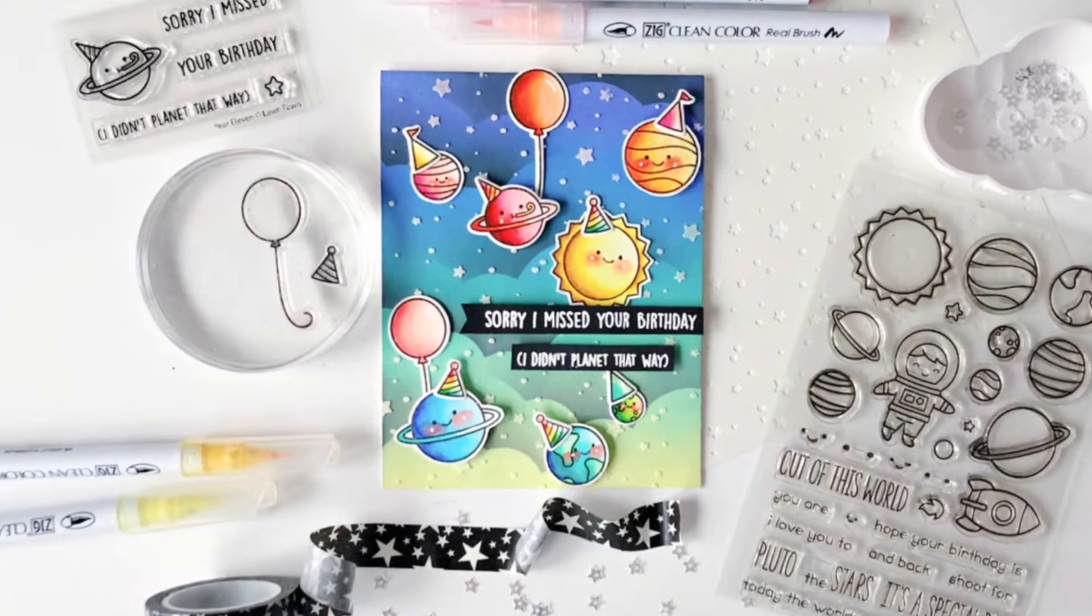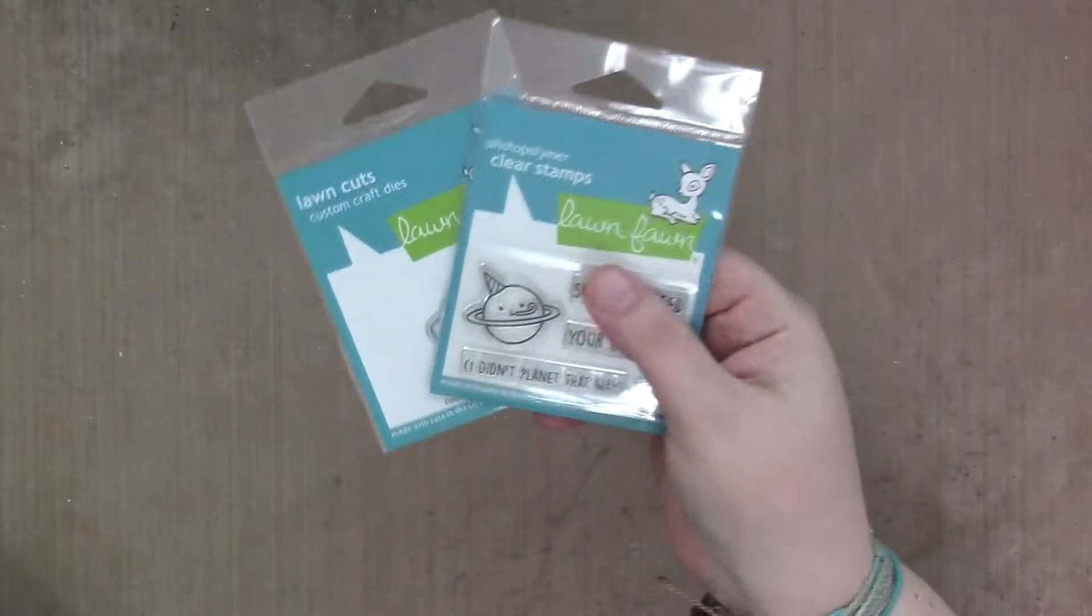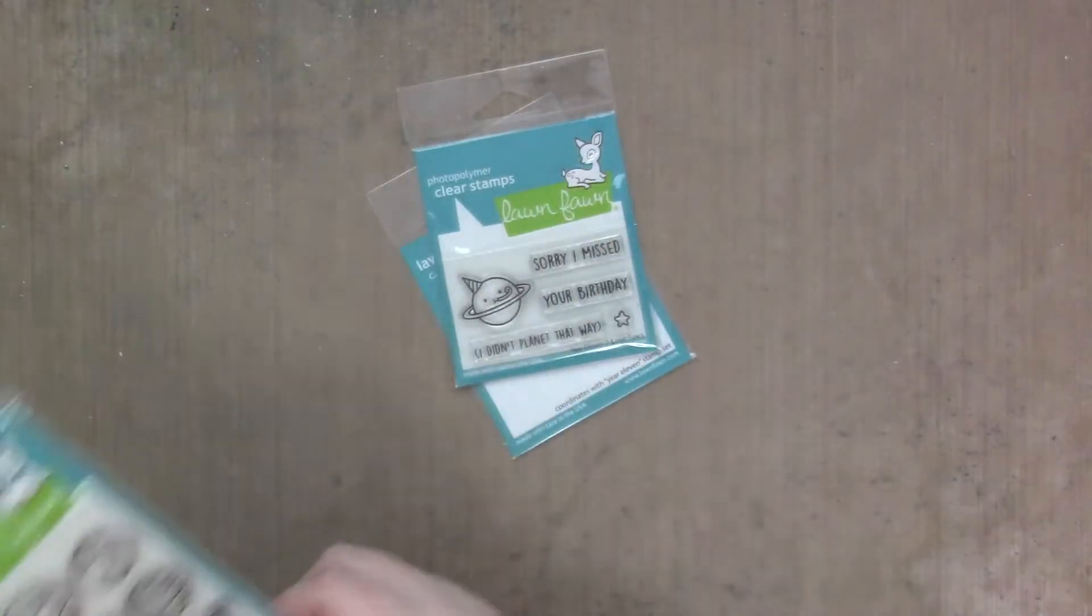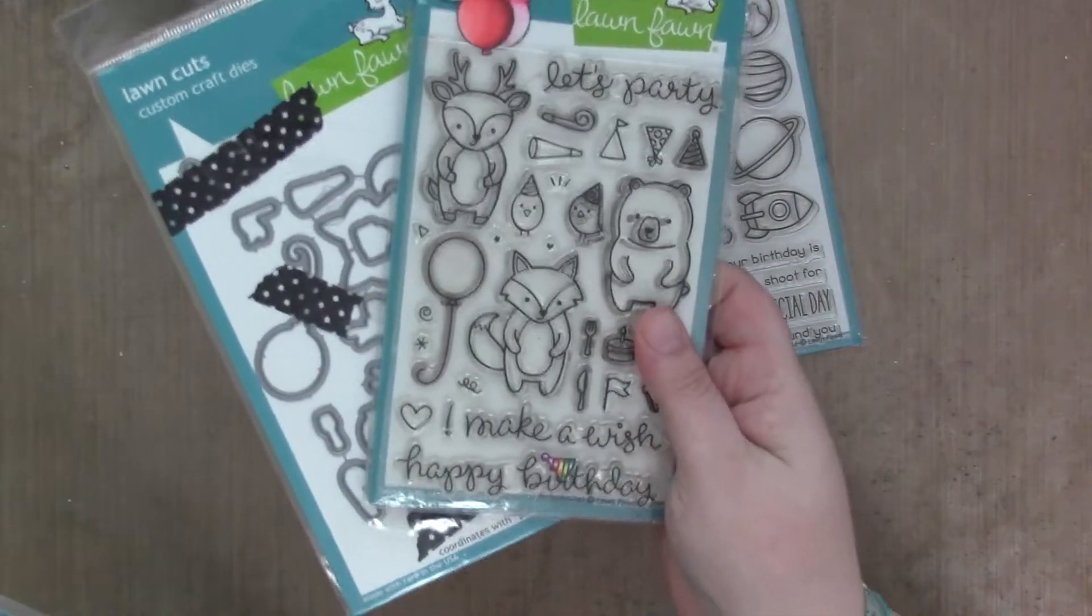Hi guys, it's Sam and I'm back with another video for Lawn Fawn. Today I'm making a belated birthday card with Year 11 stamps and dies, Out of This World stamps and dies, and Party Animal stamps and dies.